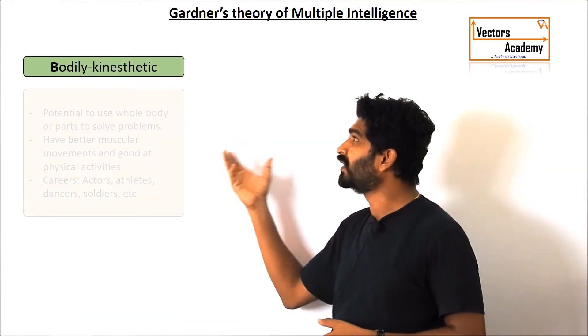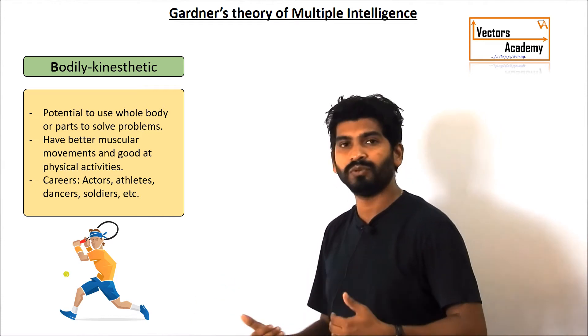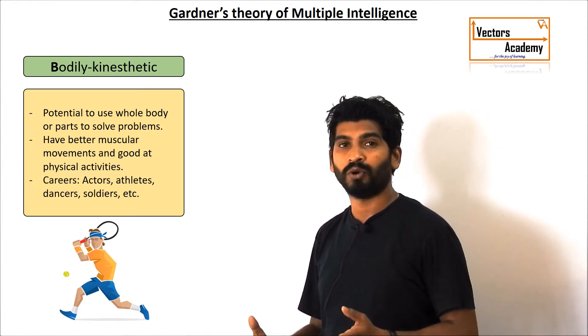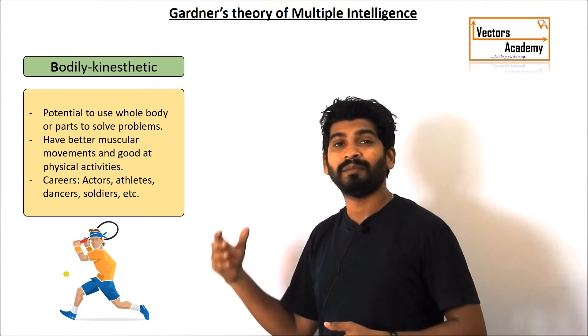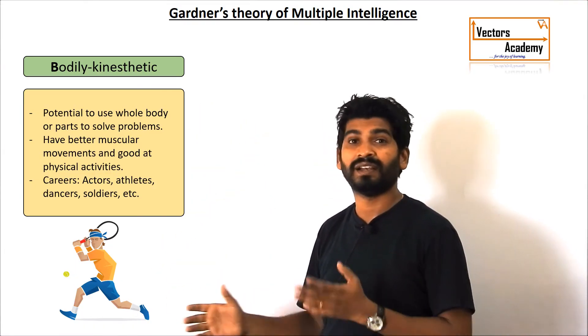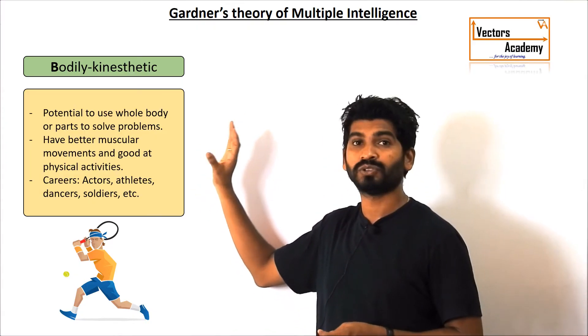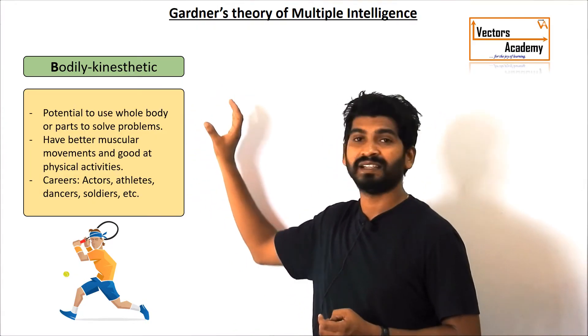Next is bodily kinesthetic. Now the people who have a proper physique, who properly do exercise daily, they have a proper body build, they can be athletes, they can be body builders, they can be any other things that are related to sports. These are the people who score higher in the bodily kinesthetic intelligence.